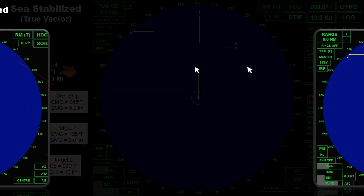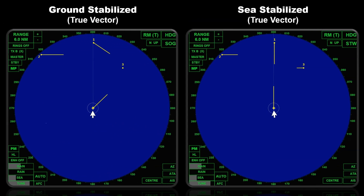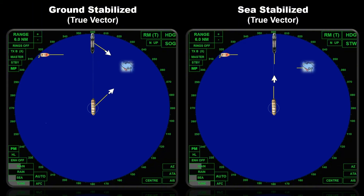Let's compare the two stabilization modes showing true vectors — ground stabilized and sea stabilized, both displaying true vectors. In ground stabilized, it shows a vector indicating a crossing situation for Target 1, but the aspect of both vessels shows a head-on situation. In sea stabilized, the vectors and aspects of both vessels correctly show a head-on situation.